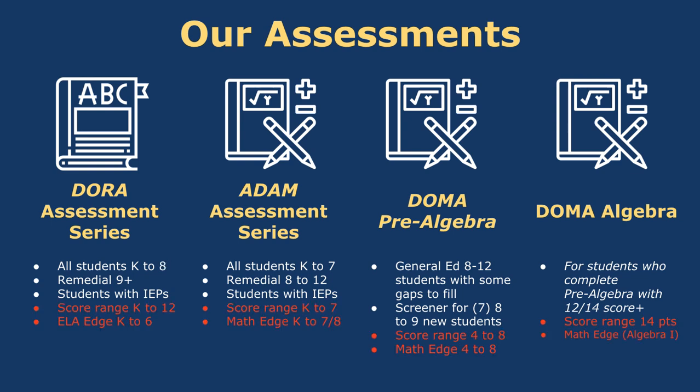Here are some score ranges to summarize. DORA has a score range of K–12, but ELA Edge has a K–6 instructional range. ADAM has a score range of K–7, and Math Edge — which it places into — has a range of K–7/8. DOMA Pre-algebra has a score range of grades 4–8 and places students into Math Edge lessons in that same range. DOMA Algebra has a score range of 14 points — 0 to 14 out of 14 — and places students into algebra one lessons within Math Edge.